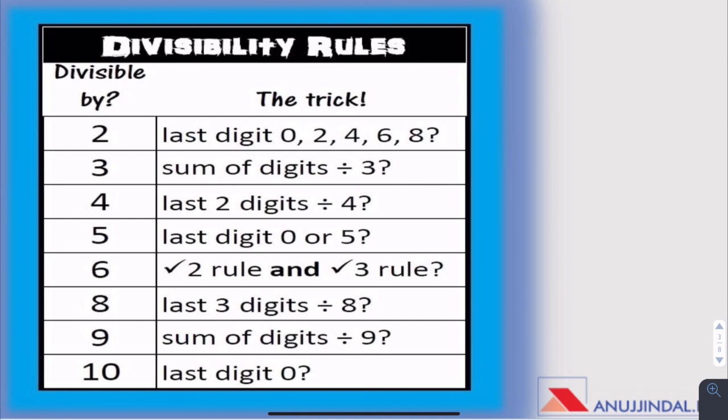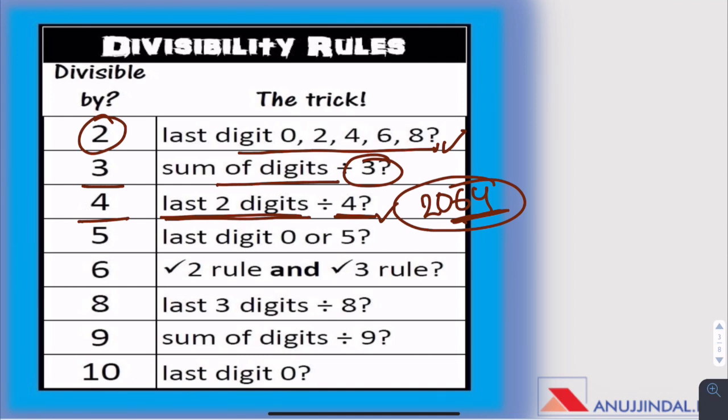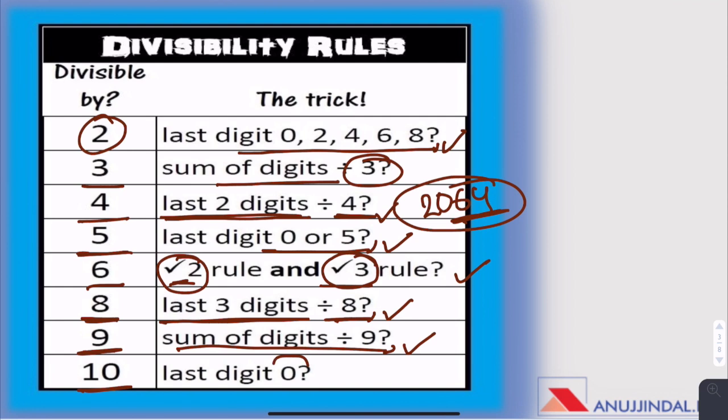Now we are going to discuss the divisibility rules. For 2, if the number is even, it is divisible by 2. For 3, the sum of digits should be divisible by 3. For 4, we divide the last two digits by 4 and if they are divisible by 4, then the whole digit is divisible by 4. For example, 2064. Just because this 64 is divisible by 4, we know that this number is divisible by 4. For 5, last digit has to be 0 or 5. For 6, it has to be an even number and its sum should be divisible by 3. For 8, we have to divide the last three digits by 8. For 9, the sum of digits should be divisible by 9. For 10, the last digit should be 0.